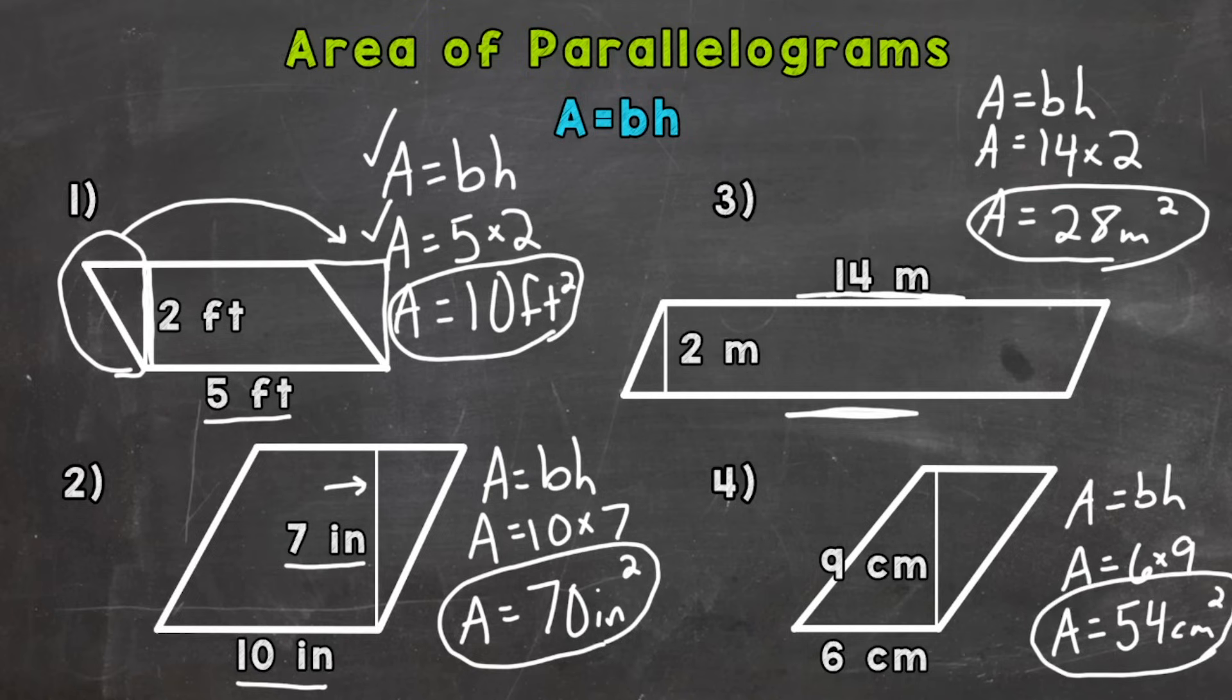So there you have it. There's how you find the area of a parallelogram. Area equals base times height. And just a reminder, if you take a look at number three, it works because if we take a portion of our parallelogram and move it to the other side, it'll actually give us a rectangle.